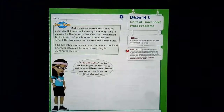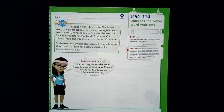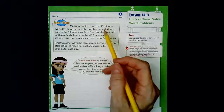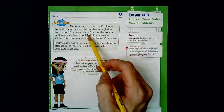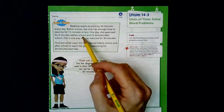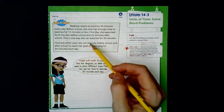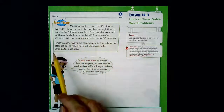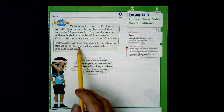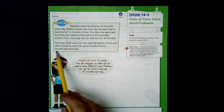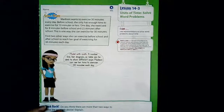Let's start at the top of page 541. Madison wants to exercise 30 minutes every day before school. She only has enough time to exercise for 10 minutes or less. One day she exercised for 8 minutes before school and 22 minutes after school. Find two other ways she can exercise before and after school to reach her goal of 30 minutes each day.